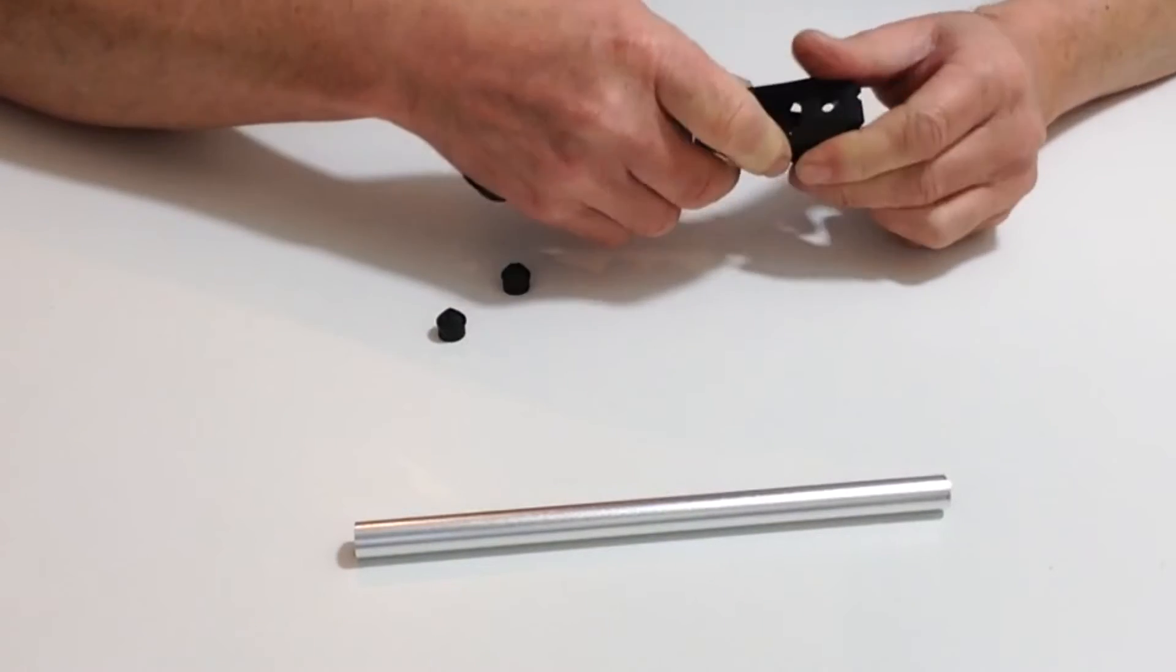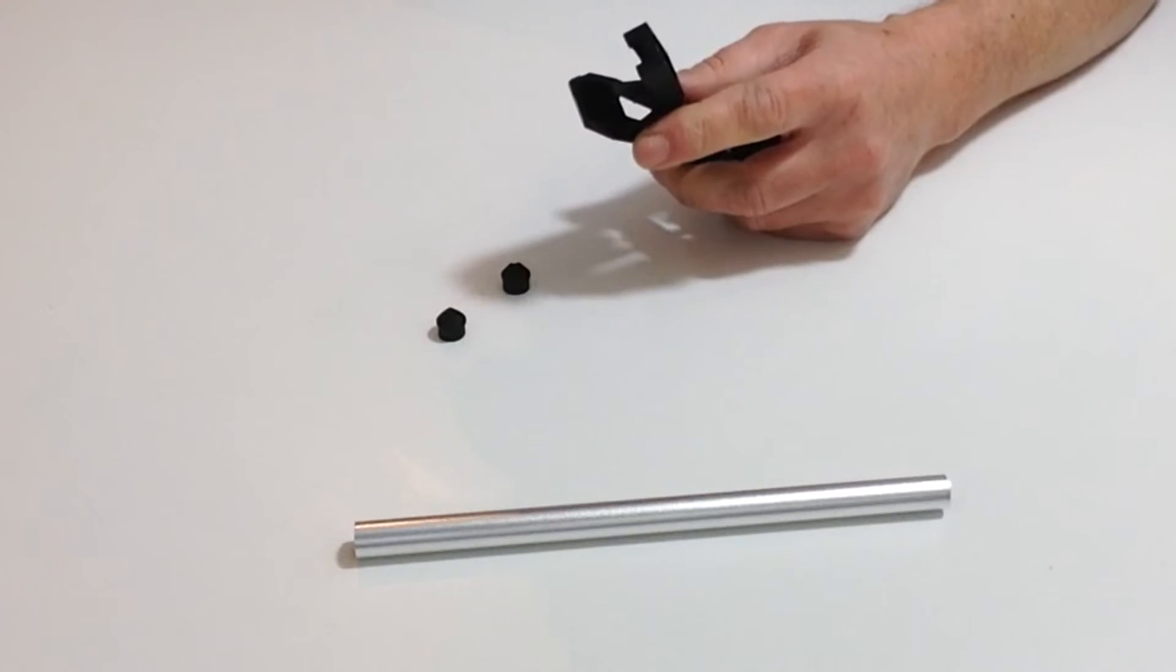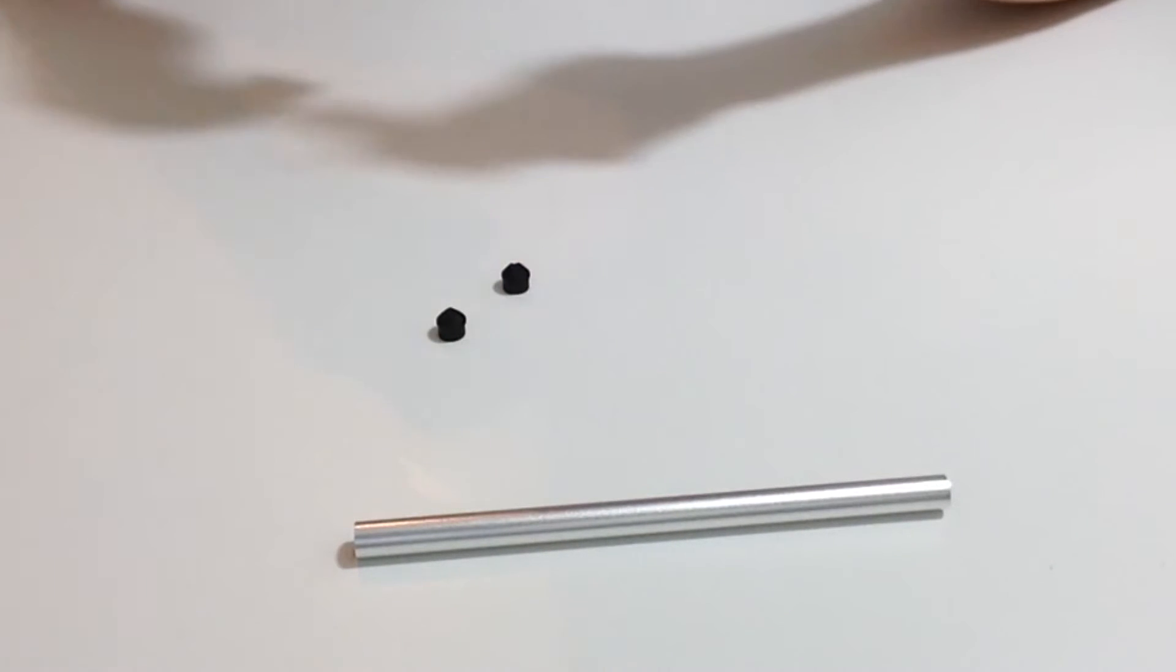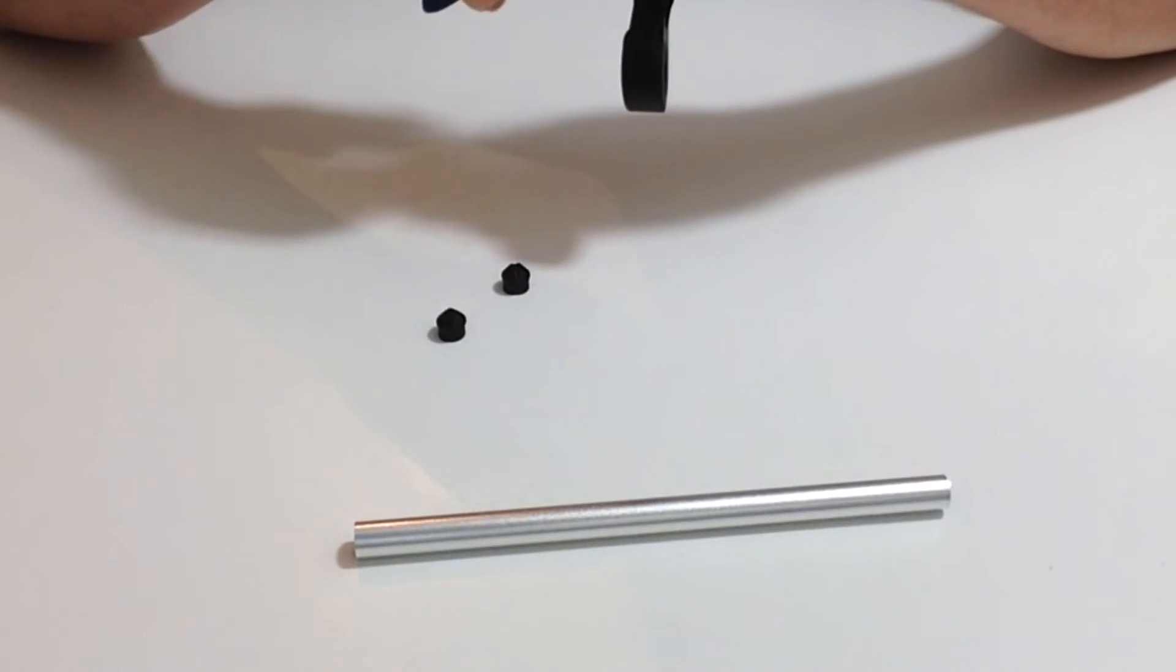That should be nice and flush. You might need some pliers or tweezers to push that back. It should be flush on both sides. It is a tight fit because we don't want the pin dropping out, so make sure that's pushed in.